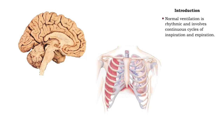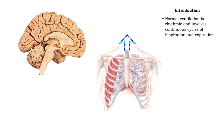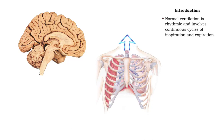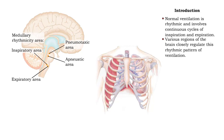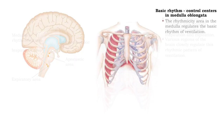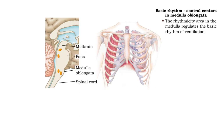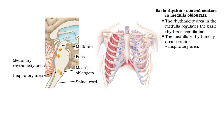Normal ventilation is rhythmic and involves continuous cycles of inspiration and expiration. Various regions of the brain closely regulate this rhythmic pattern. The rhythmicity area in the medulla regulates the basic rhythm of ventilation. The medullary rhythmicity area contains two smaller regions: the inspiratory area and the expiratory area.